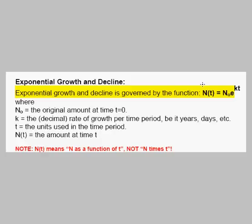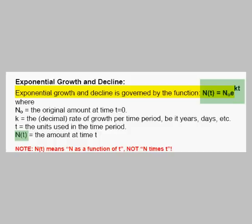Exponential growth and decline is governed by the function n as a function of t equals n sub not times e to the kt power. Note that n as a function of t almost looks like n times t — it's not n times t, it's n as a function of t, just like f as a function of x. We could have f instead of n if we were using x instead of t.